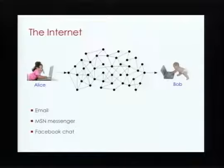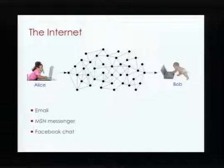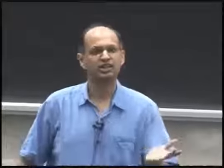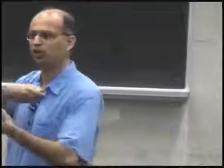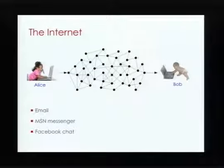Here's a picture of the internet. The two communicating parties we typically call Alice and Bob — they're talking perhaps by email, MSN messages, or Facebook chat. Alice composes a long email and sends it to Bob. The email travels over the internet, typically broken into packets of a fixed size, each finding its way from Alice's computer to Bob's computer.